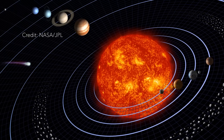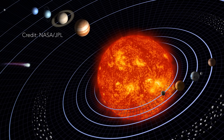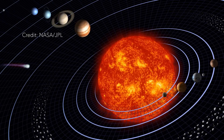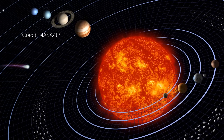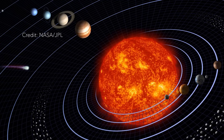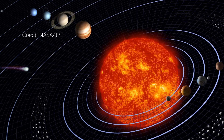Whenever you see a representation of the solar system, it always shows all the planets moving around the Sun in approximately the same way. Why are the planets aligned? Let's ask an astronomer. Do the planets really all line up, as is often shown in diagrams?